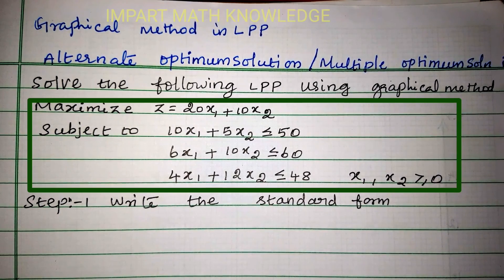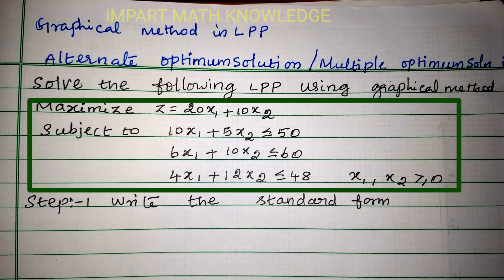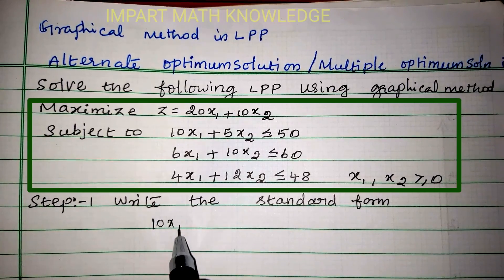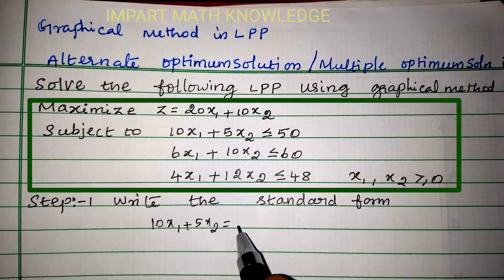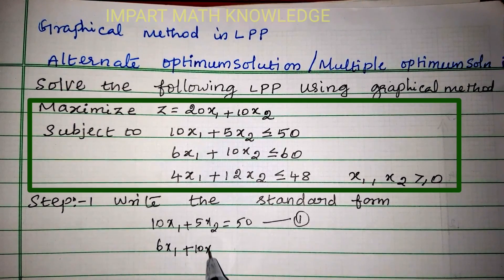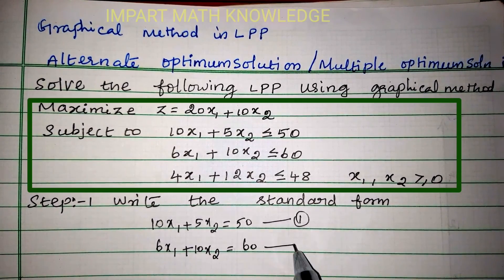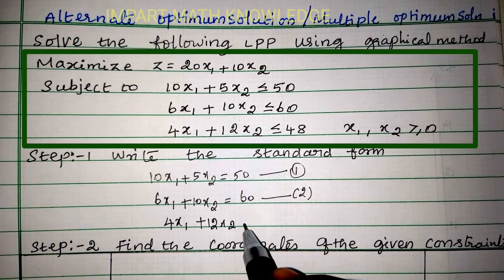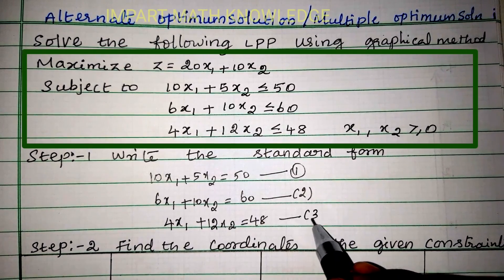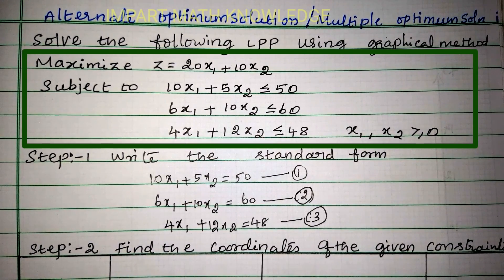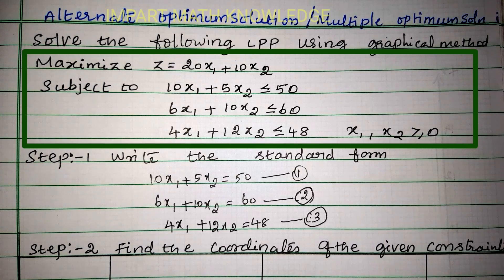The first step is to write the standard form. Convert each inequality constraint into an equation: equation (1) is 10x1 + 5x2 = 50, equation (2) is 6x1 + 10x2 = 60, and equation (3) is 4x1 + 12x2 = 48.